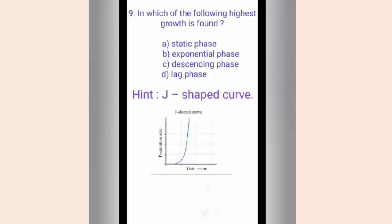Question nine. In which of the following is the highest growth found? Options are A. Static phase, B. Exponential phase, C. Descending phase, D. Lag phase. The hint shows a J-shaped curve. The correct answer is option B, Exponential phase. Exponential phase shows maximum growth and has a J-shaped curve.